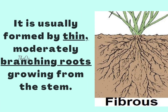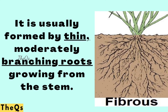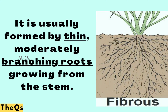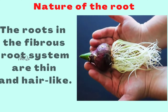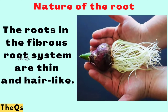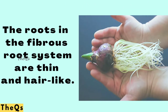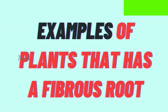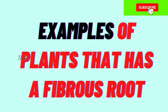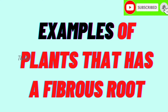A fibrous root system is usually formed by thin, moderately branching roots growing from the stem. The roots in the fibrous root system are thin and hair-like.